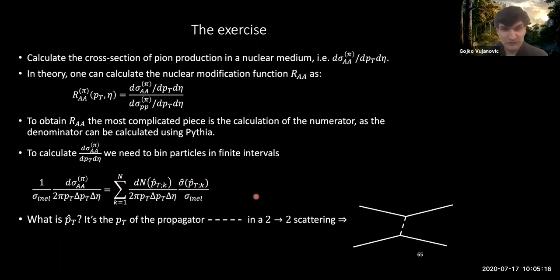For each and every one of those pts, pt-hat, you would have an associated cross-section for this process to happen. So in order to get the cross-section that you can measure in an experiment, you need to bin in pt the different hadrons, and you need to multiply by the associated cross-section that comes from this hard scattering.